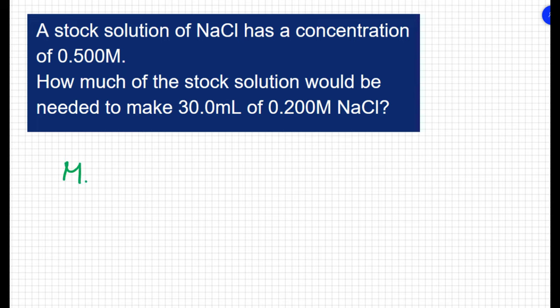Fortunately, the dilution equation from the text makes this pretty simple. M1V1 equals M2V2. And we're looking for V1, our initial volume. So I can say V1 is going to equal M2V2 all over M1. I just divided both sides by M1.